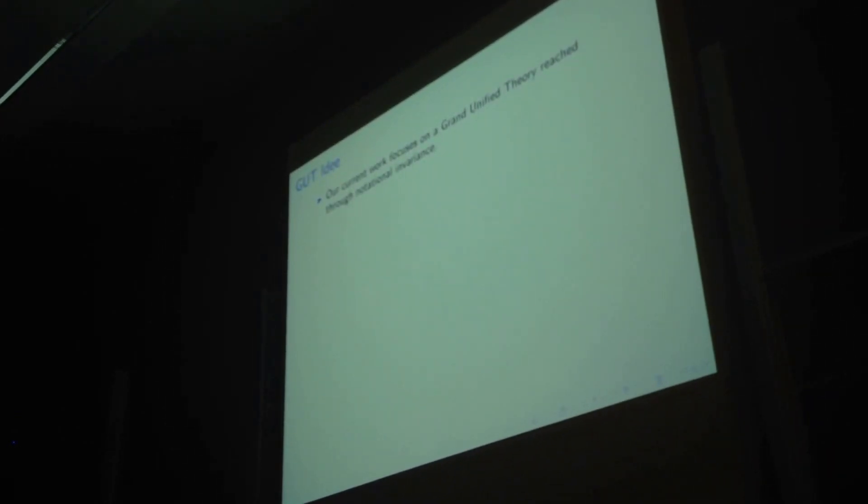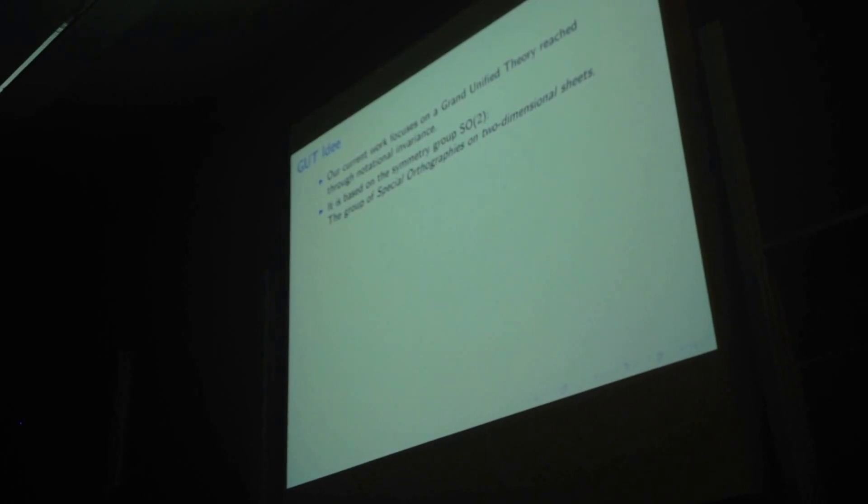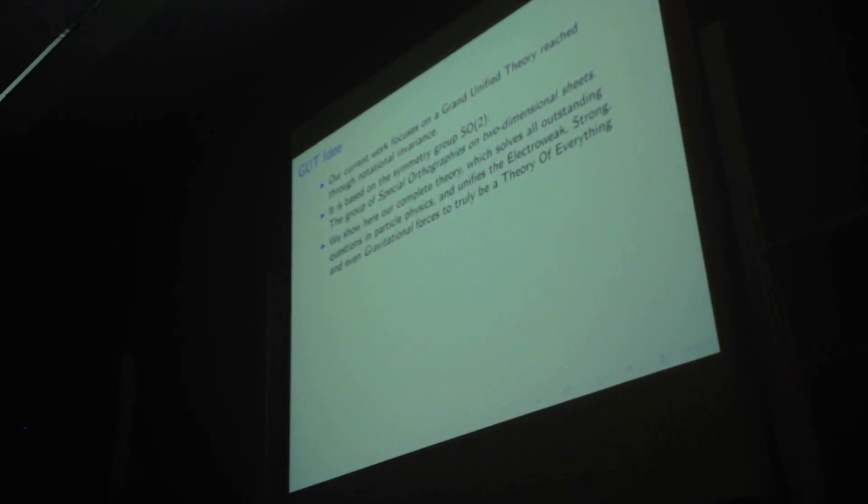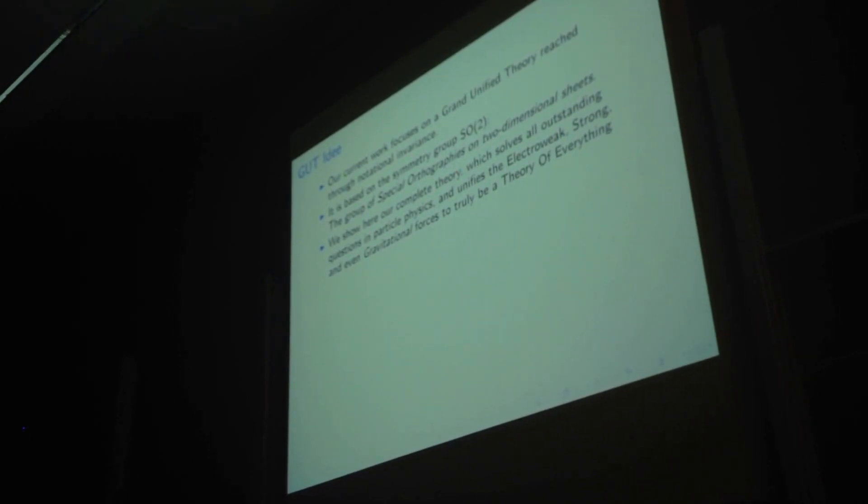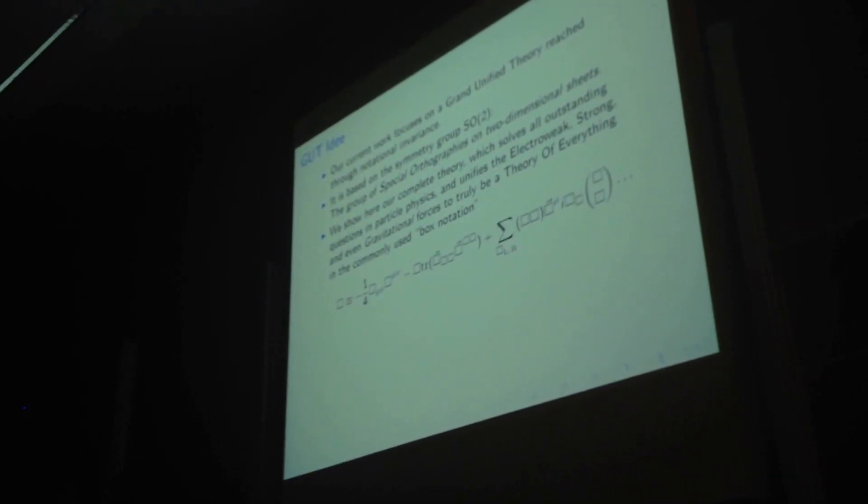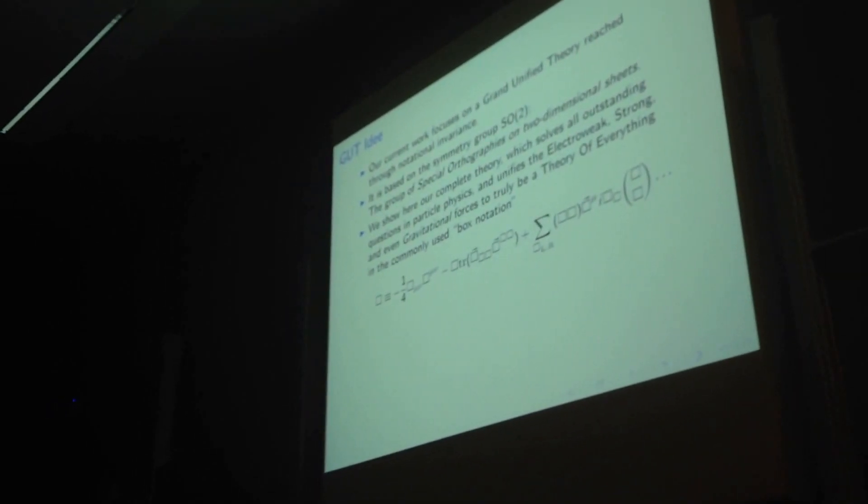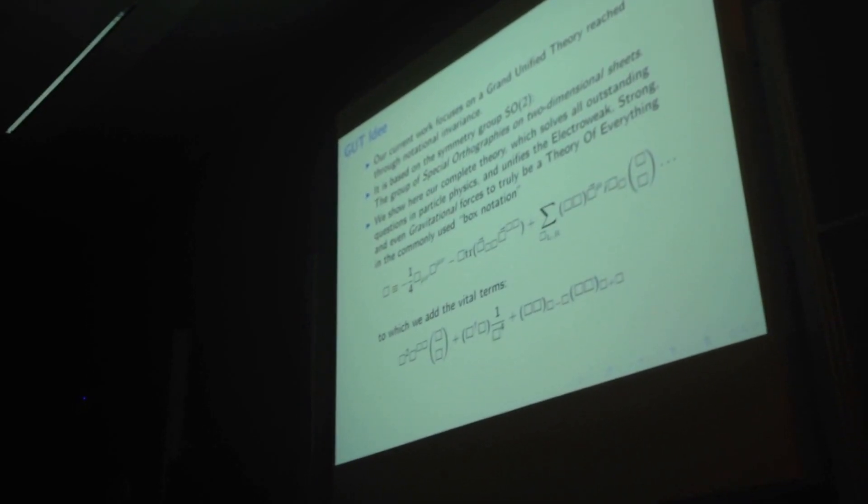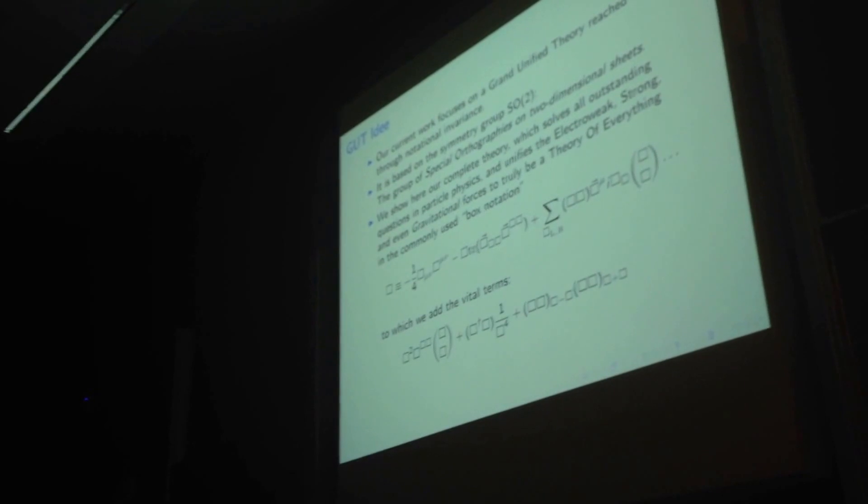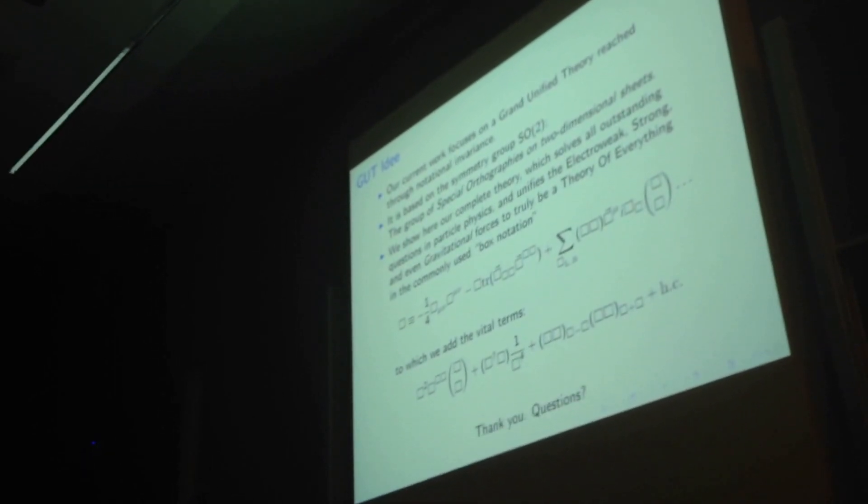So, I'd like to conclude with our current work. Namely, a grand unified theory that we've reached through notational invariance. It's based on the symmetry group SO(2), which is a symmetry group of special orthographers on two-dimensional sheets. And we show our complete theory here, which solves all outstanding questions in particle physics. And actually, it's pretty much a theory of everything. And I'll show it in the commonly used box notation, which I see in many conferences these days. So here we take the standard model and we add to the very important period. And, of course, the Hermitian conjugate. And, well, pretty much everything's obvious. So thank you very much for your attention.